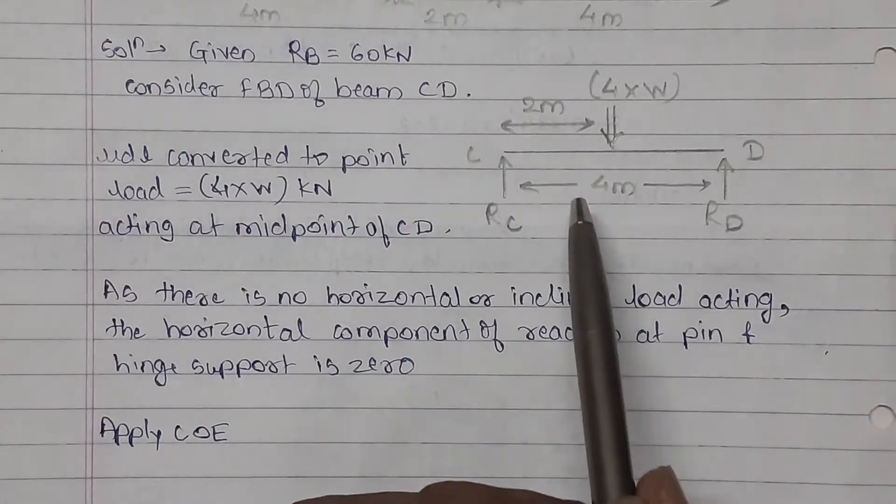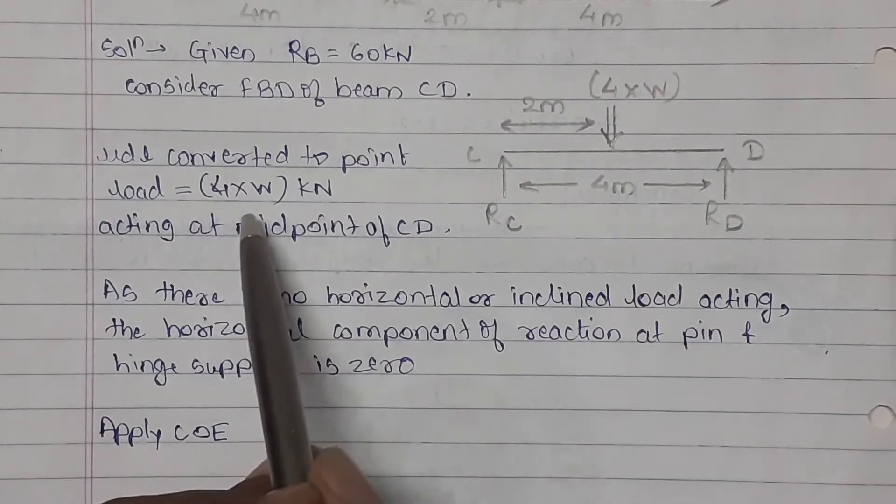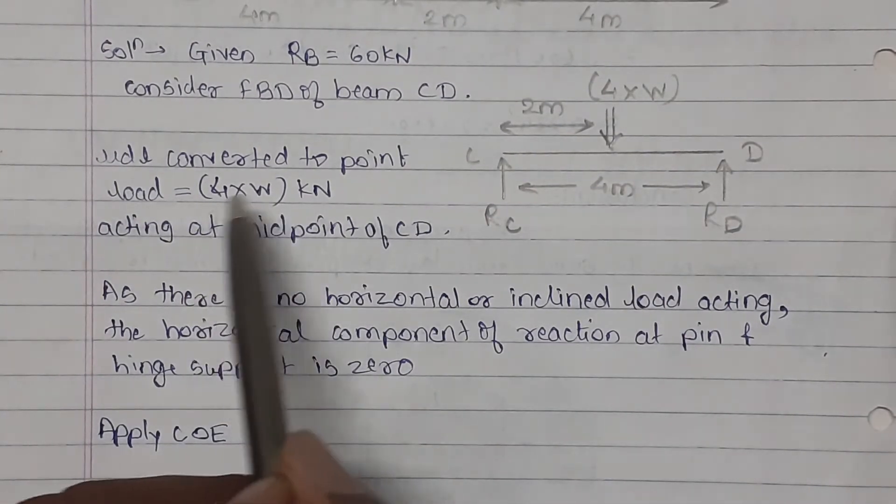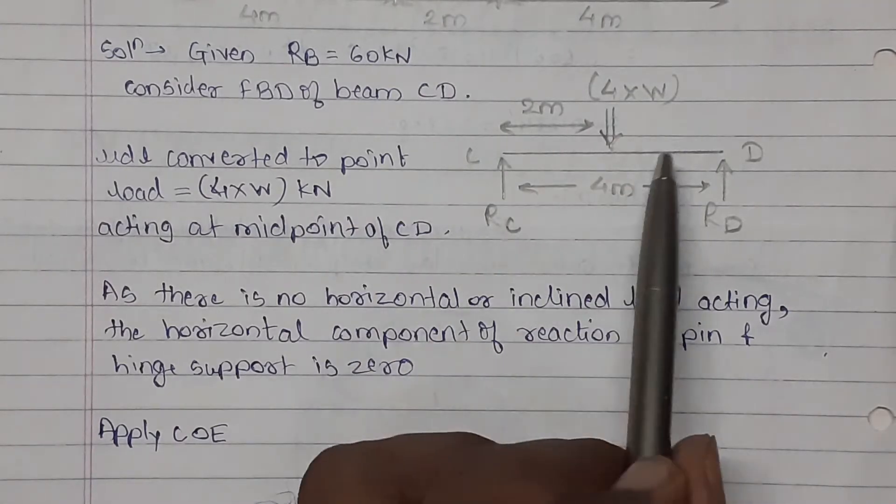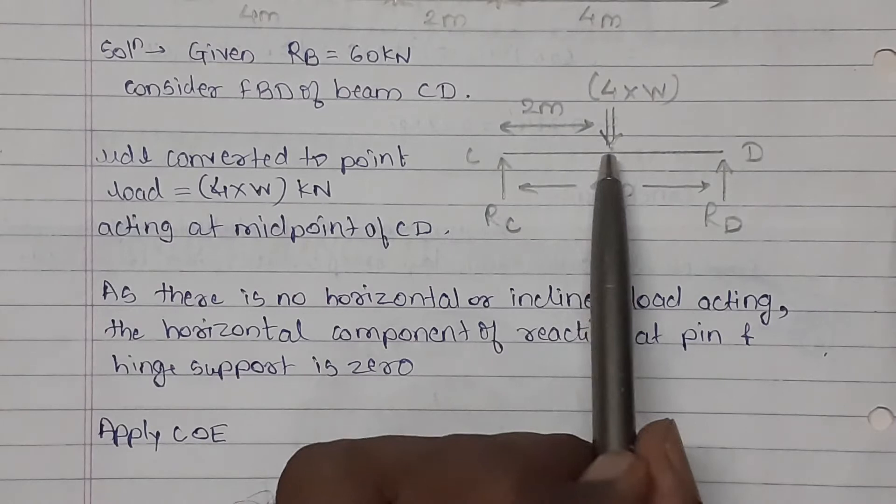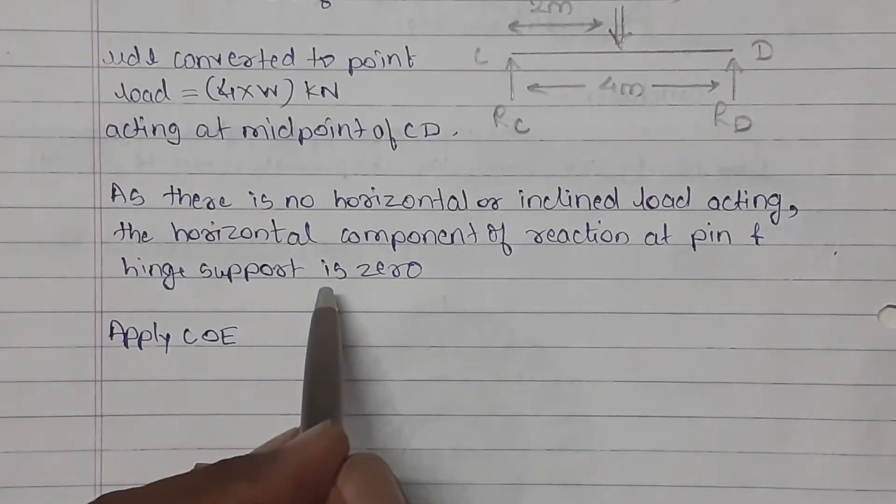Now in case of this FBD CD, the UDL is converted to point load. Here we will multiply the load intensity by the span. We will get the point load. It will act at the center of the span which is equal to 2 meter from any end. So now we will apply condition of equilibrium on beam CD.